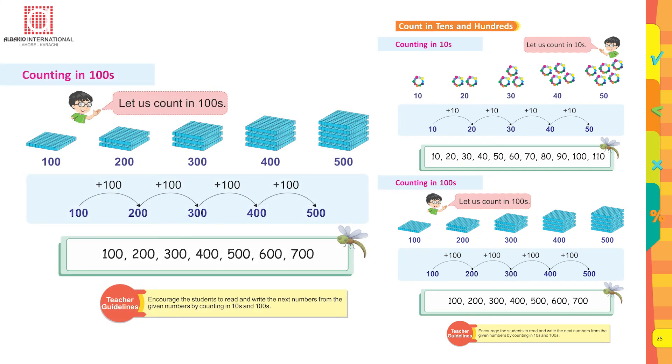Counting in hundreds: 100 plus 100 equals 200, 200 plus 100 equals 300, 300 plus 100 equals 400, 400 plus 100 equals 500. So: 100, 200, 300, 400, 500, 600, 700.